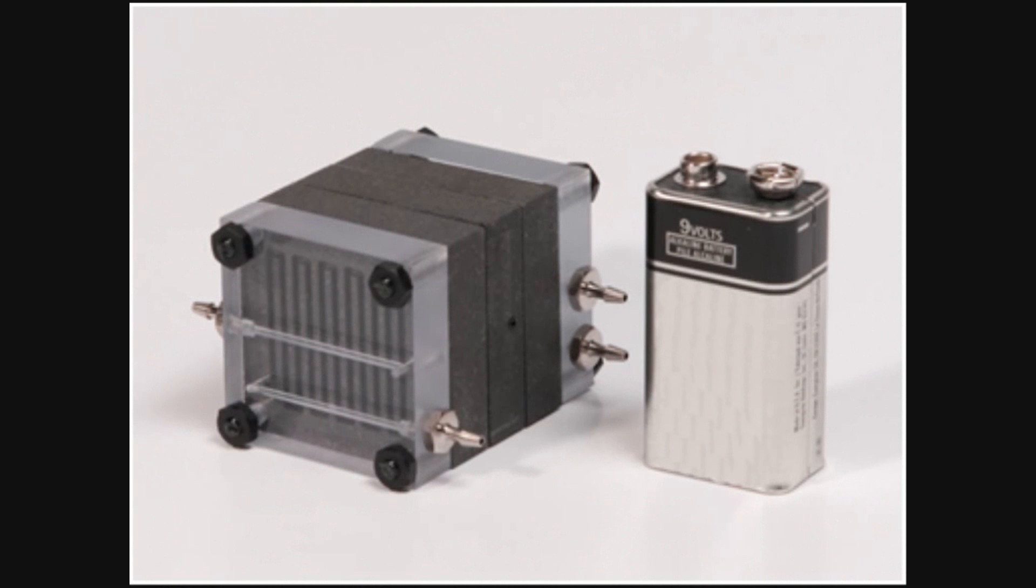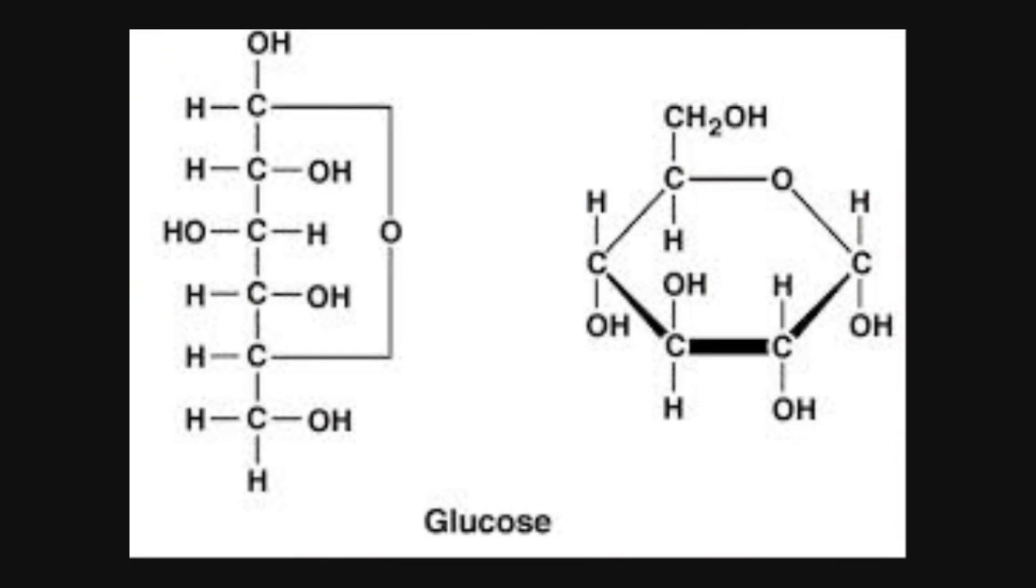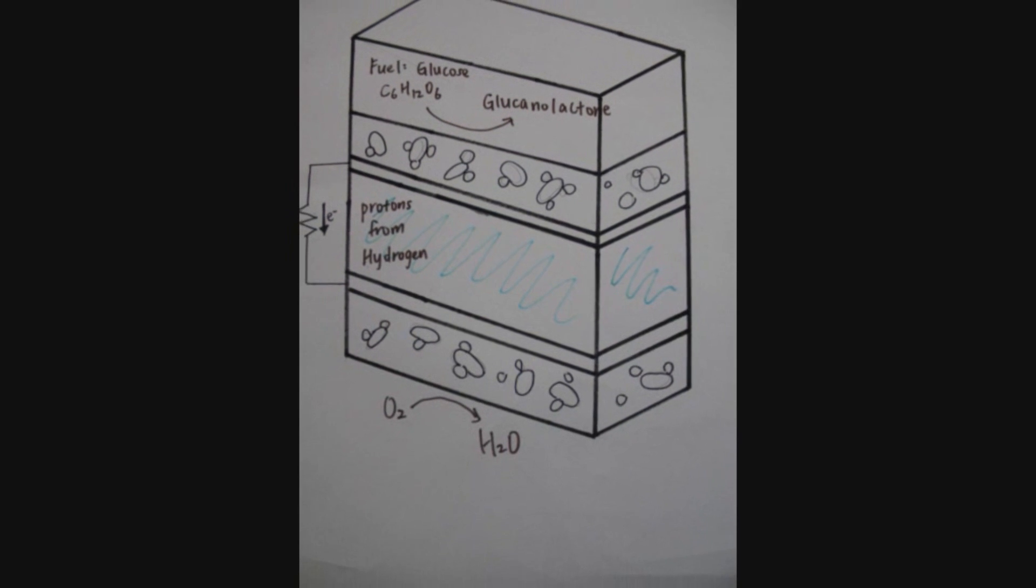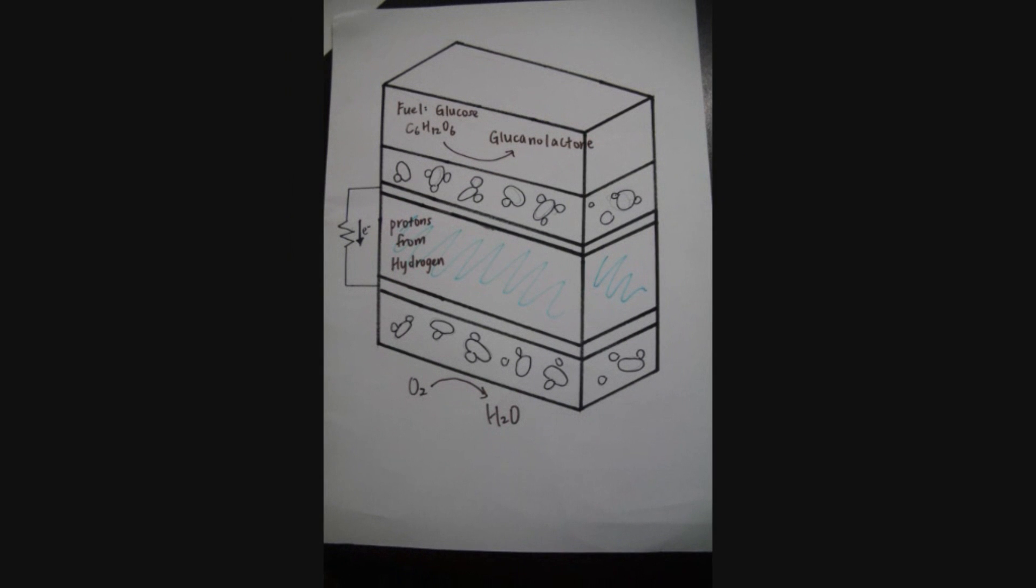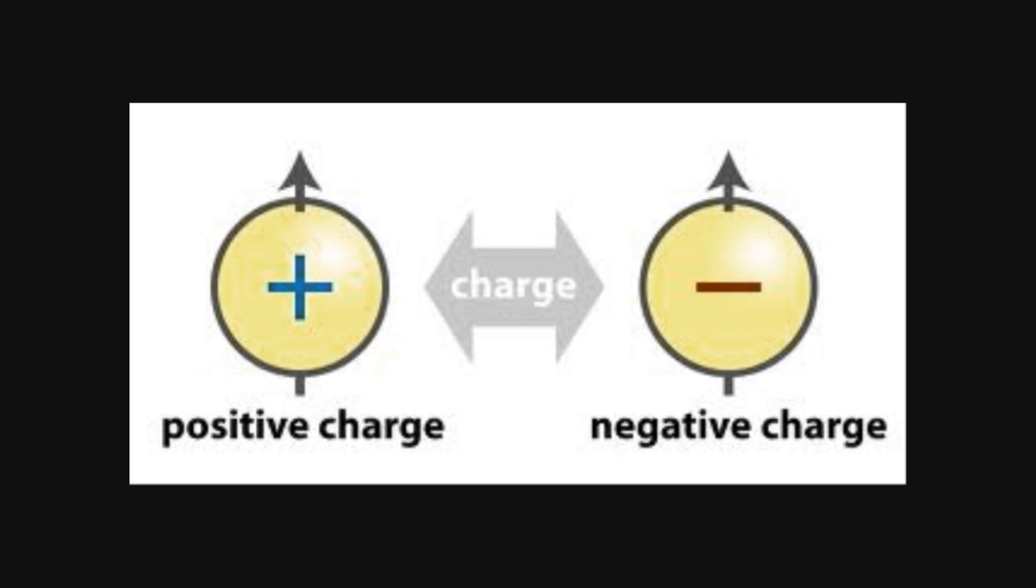Biobatteries are powered by organic compounds. One of the compounds usually used is glucose. Just like normal batteries, biobatteries require a flow of electrons to complete a circuit. When enzymes break down glucose, electrons and protons are released.